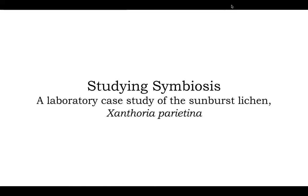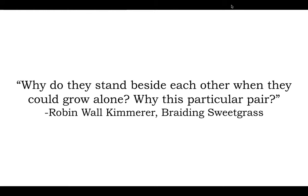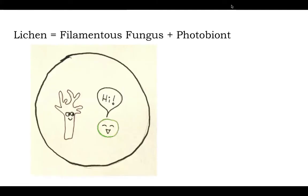So there's a lot going on in terms of this lichenized phenotype, and we really want to understand how these interkingdom interactions come together to create it. I'm going to go into a laboratory case study now of the sunburst lichen Xanthoria parietina. I want to start with a quote by Robin Wall Kimmerer as a motivating question: 'Why did they stand beside each other when they could grow alone? Why this particular pair?' And it's about time to state the classic definition of a lichen — a symbiotic association between a filamentous fungus and a photobiont. A photobiont is a photosynthetic symbiont, typically green algae but also sometimes cyanobacteria. The filamentous fungi are generally ascomycetes, but there are some lichenized basidiomycetes as well.